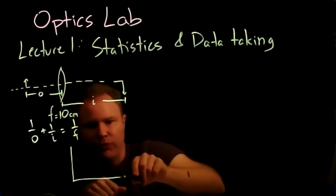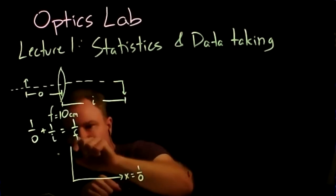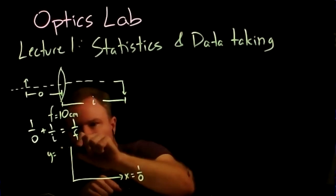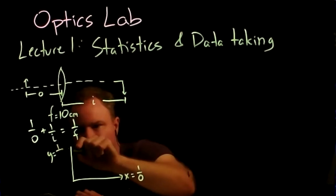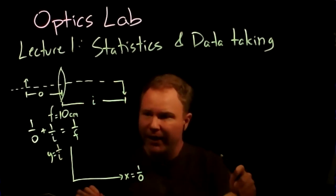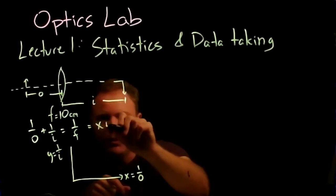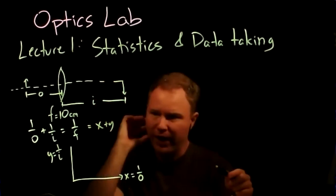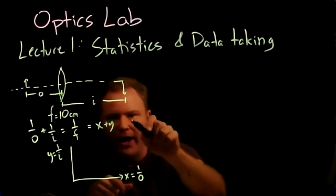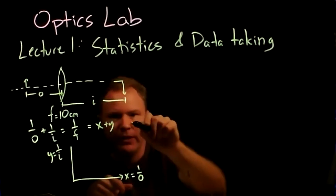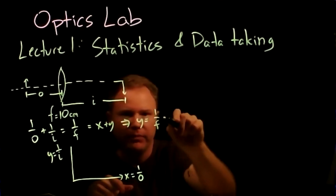On our XY plot, the X-axis is actually going to be 1/O, and our Y-axis is going to be the thing we measure — the image distance, 1/I. We can write the lens equation as X + Y = 1/F. Solving for Y, we get Y = 1/F − X.